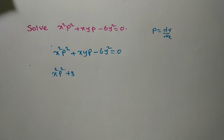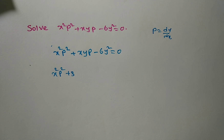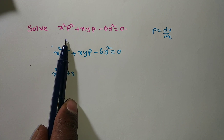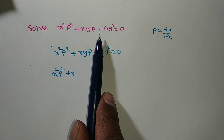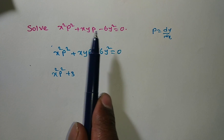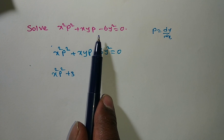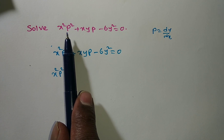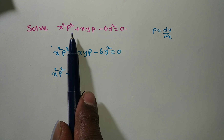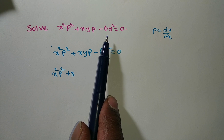Hi friends, in this video we are discussing one problem that is based on first order but not first degree. Solve: x squared p squared plus xy p minus xy squared equals zero. This is a differential equation in terms of f of x, y, p equals zero.